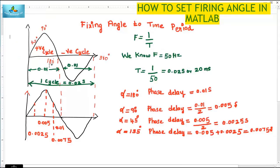First let us take a waveform. I am assuming the frequency of the waveform as 50 Hz. The time period is unknown but frequency is known. Using the frequency, I am calculating the time period. Time period is equal to 1 divided by f. Here the frequency is 50; if you are doing for 60 Hz you can change 50 to 60. Here I assumed frequency as 50 and hence T is equal to 1 by 50. The time period for one cycle is 0.02 seconds or 20 milliseconds.